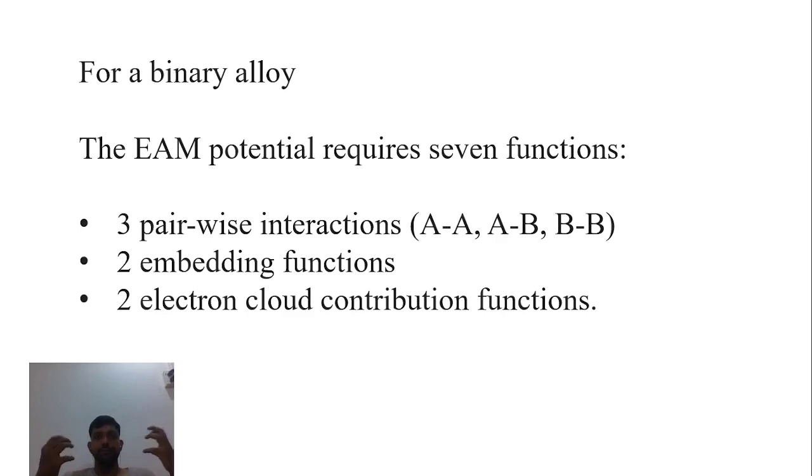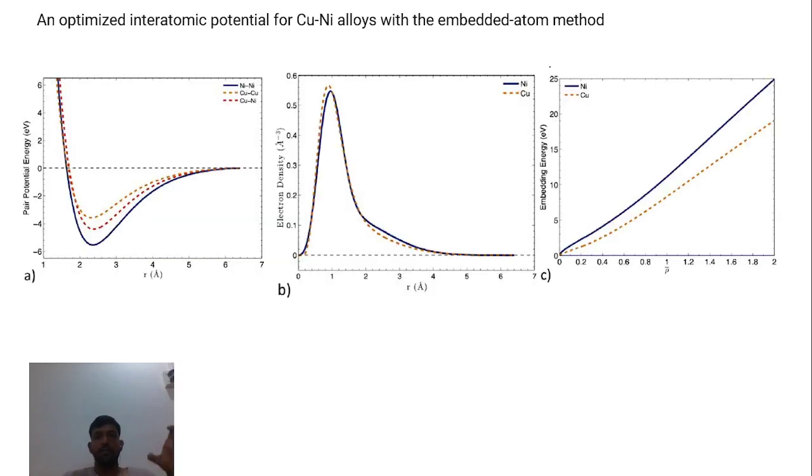This is a very good paper you can read about optimized interatomic potential for copper-nickel alloys. First, they start with the embedding energy for two systems, then electron cloud density for two systems, and the pairwise potential energies for three types of systems. The total number is seven for binary alloys, as shown in these experimental graphs.